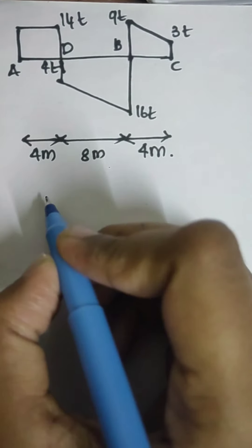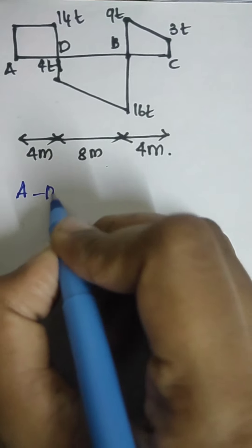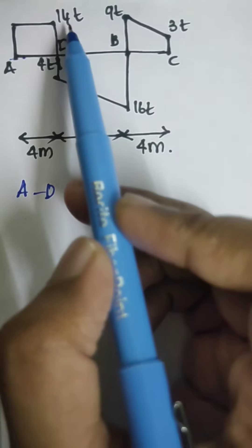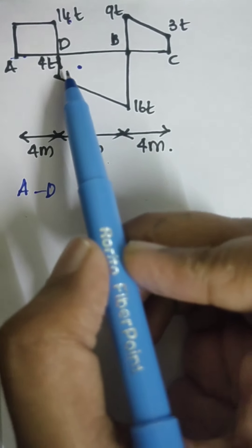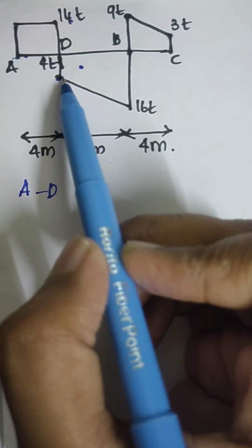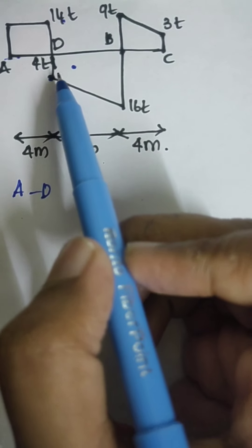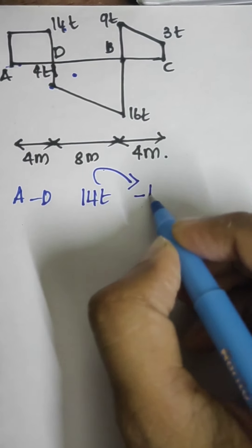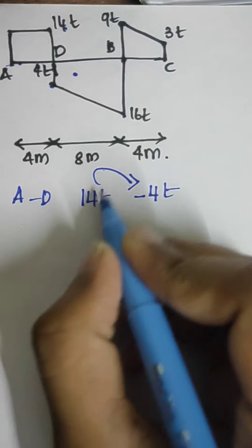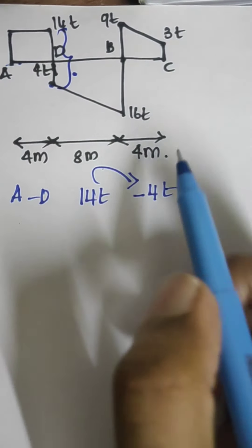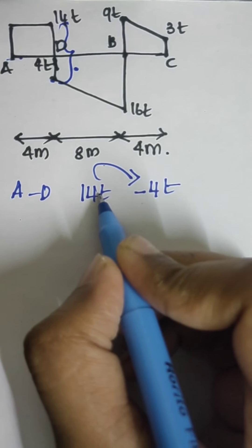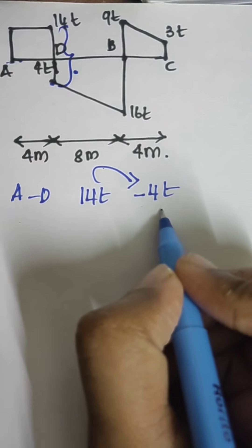From A to D, the shear force at D is 14t and here it is 40. So there is a sudden drop in the shear force diagram from 14t to minus 14t. This is the magnitude of the shear force — there is a sudden drop from 14t to minus 14t.